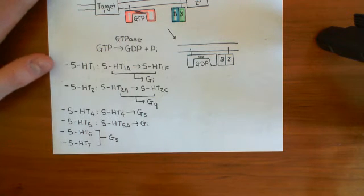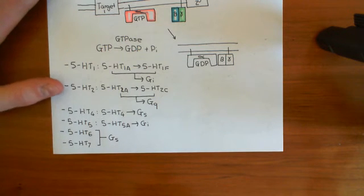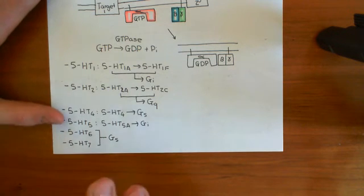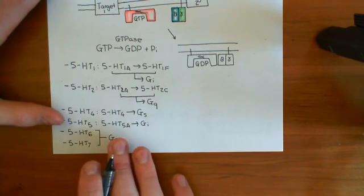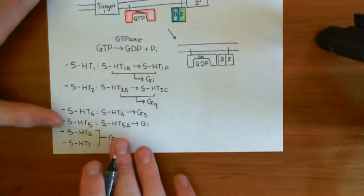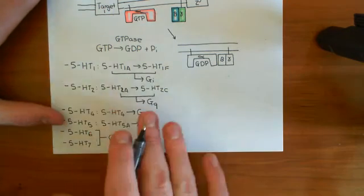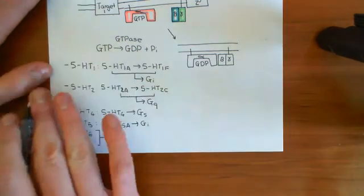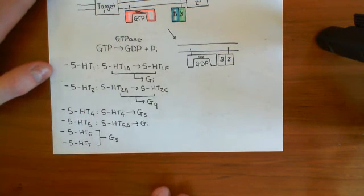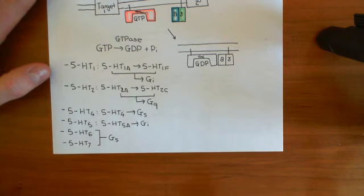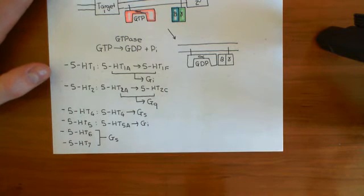That now concludes our discussion of the serotonin receptors which are G-protein coupled receptors. The main presence of serotonin receptors is within the central and peripheral nervous system, especially the central nervous system. Occasionally, you can find them in the gut as well on smooth muscle.